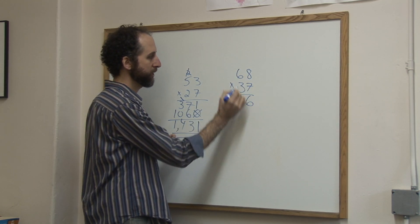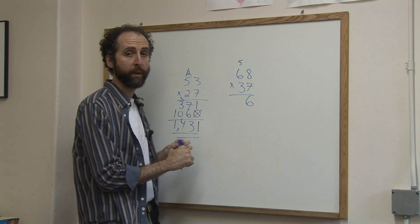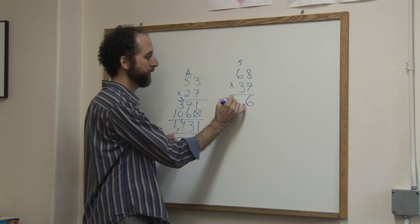7 times 8 is 56, carry the 5. 7 times 6 is 42, plus 5 is 47.